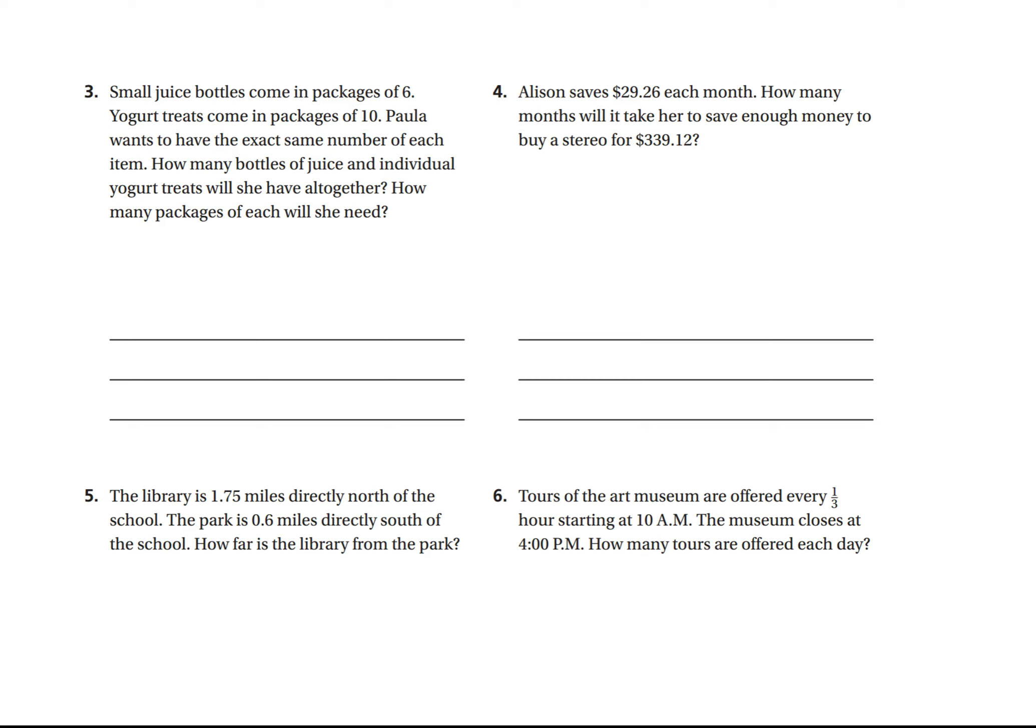Let's go over these. Small juice bottles come in packages of 6. Yogurt treats come in packages of 10. Paula wants to have the exact same number of each item. So we have small juice packages of 6, and we have yogurt treats in packages of 10. So we need to find the least common multiple of these two.